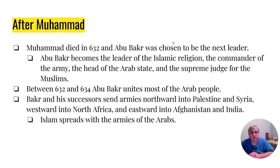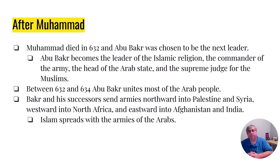In the year 632 Muhammad dies, and one of his relatives, Abu Bakr, is chosen to be the next leader. He's not just the leader of the Islamic faith — he becomes the commander of the army, the head of the kingdom, and the supreme judge. In the next two years, Abu Bakr unites most of the people in the area under the flag of Islam, and in trying to create a larger kingdom, Abu Bakr and many of his successors start conquering territories around Mecca. Wherever these armies go, Islam spreads as well.